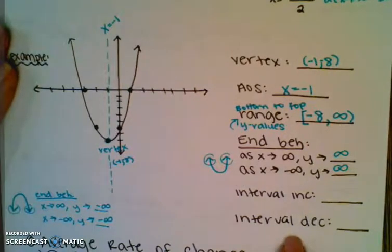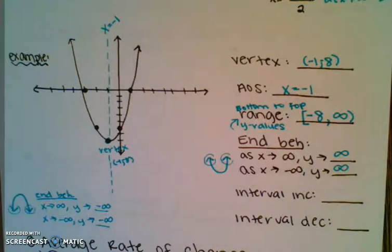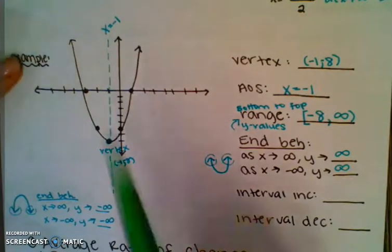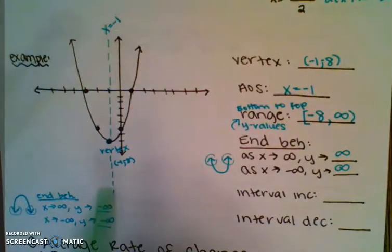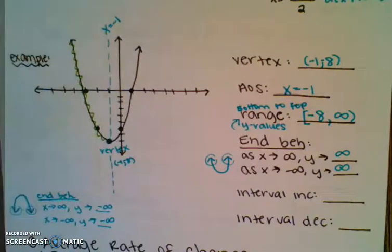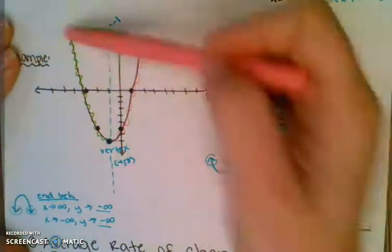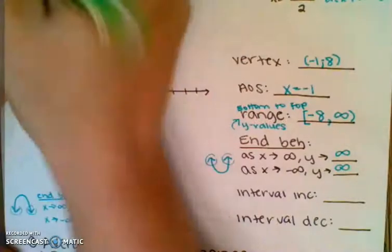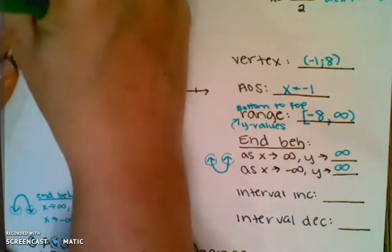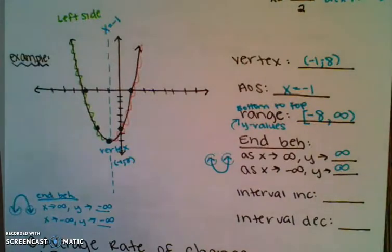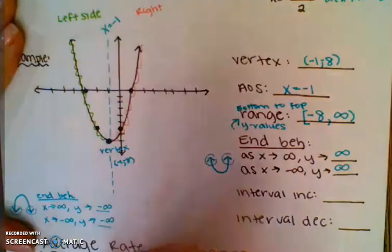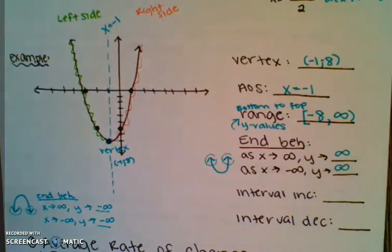Last but not least for graphing, you have your interval of increase and decrease. For all of our quadratics — all of our parabolas, which are the U shapes — there will be one interval of increase and one interval of decrease. So it splits: half of it, then you stop at the vertex, and then you have the other half. It's just left side and right side — one side will be increasing and one side will be decreasing.